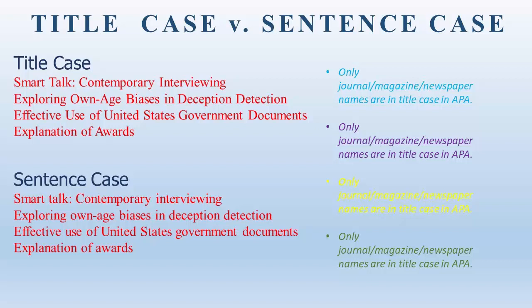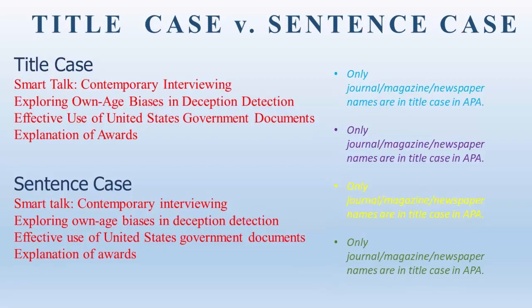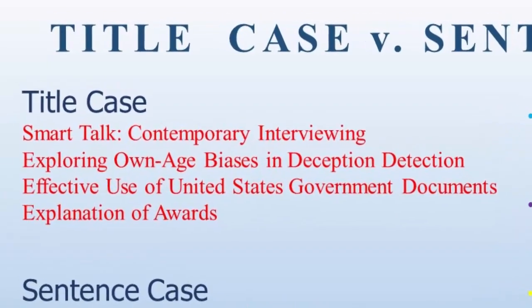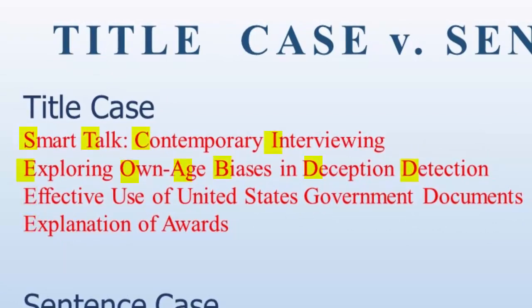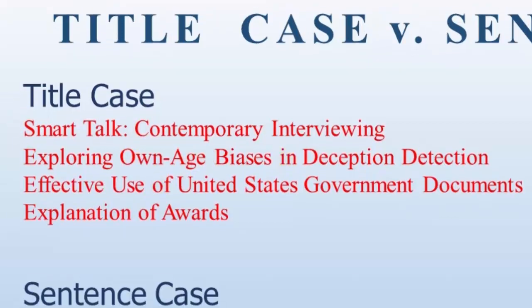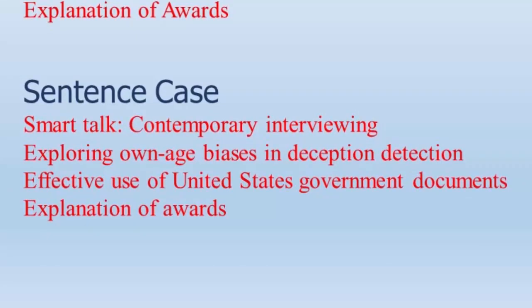Before continuing, let's make sure you understand the difference between title case and sentence case. The top examples are in title case. Title case is how we learn to write titles in elementary school — there is an initial capital, and all the big words also have an initial capital letter. In the examples, you can see small words such as IN and OF that do not have an initial capital letter. Sentence case is how we write sentences. There is still an initial capital, and there is capitalization after the colon at the beginning of a subtitle. There are capitals in proper nouns, such as United States, but all other words follow the sentence rule.